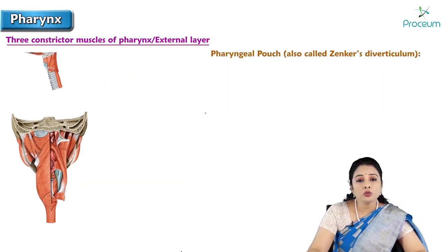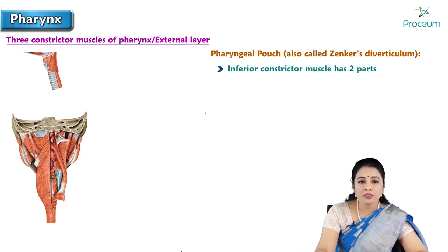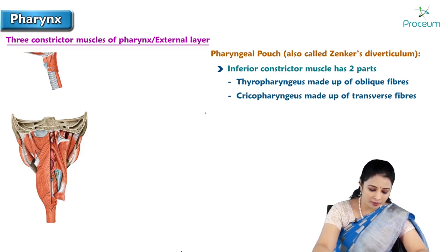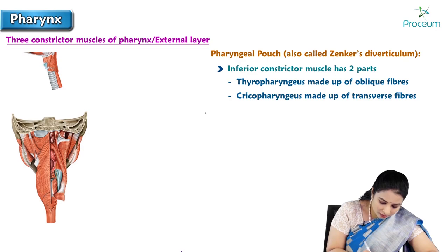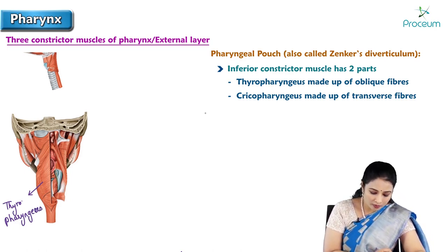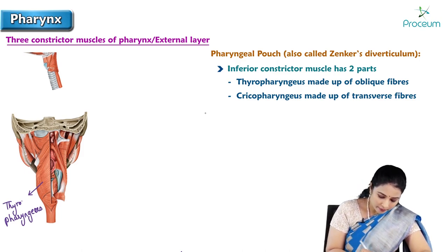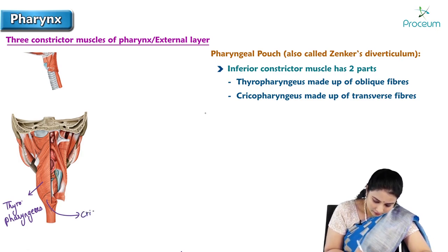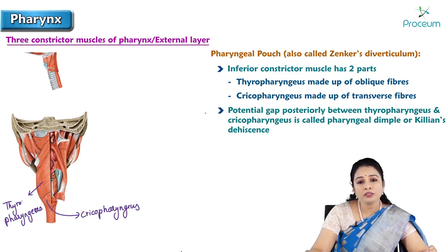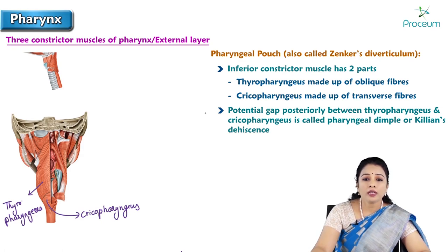Next is the pharyngeal pouch, also known as Zenker's diverticulum. The inferior constrictor muscle has two parts: thyropharyngeal, made up of oblique fibers, and cricopharyngeal, made up of transverse fibers. Here is the inferior constrictor — these oblique fibers are thyropharyngeal, and here is the cricopharyngeal. The potential gap between the thyropharyngeal and cricopharyngeal posteriorly is called the pharyngeal dimple or Killian's dehiscence.